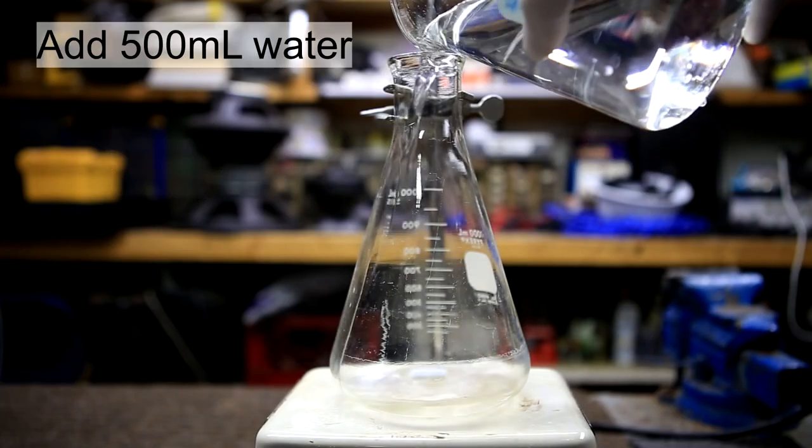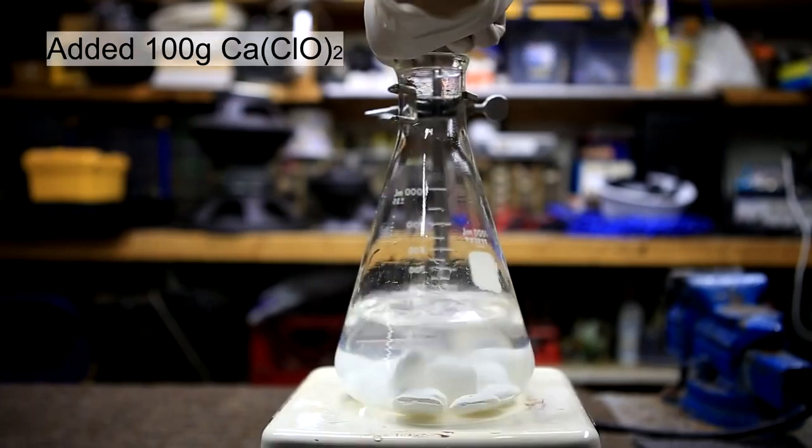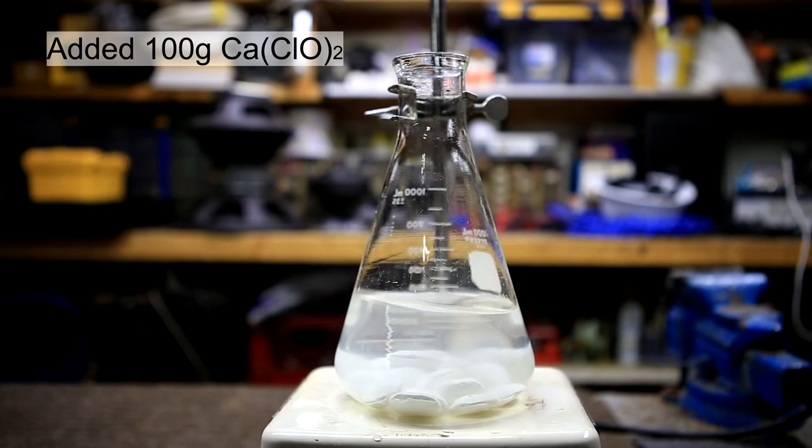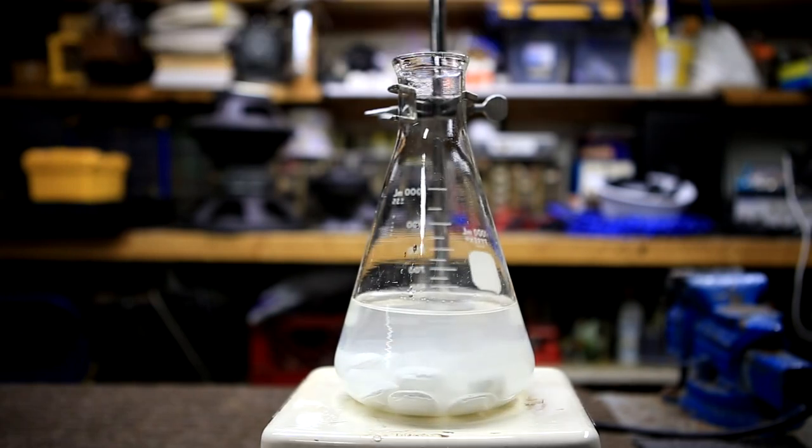500 milliliters of water were added to a 2 liter Erlenmeyer flask. Then 100 grams of calcium chloride tablets were added. This mixture was then stirred and brought to a boil.